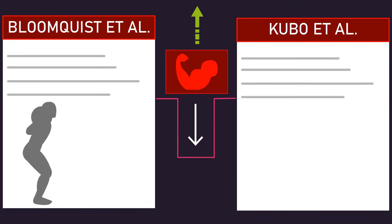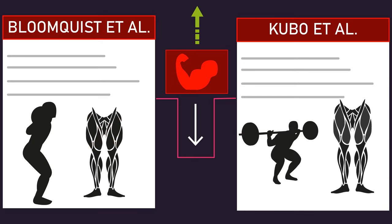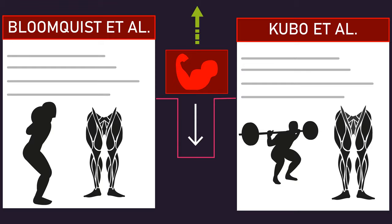These two studies collectively indicate deeper squat depths are associated with more hypertrophy overall. 60-degree squats in the Bloomquist study failed to optimize growth across many regions of the front thigh, while although 90-degree squats in the Kubo study seemed to be fine for quad growth, they failed to maximize gluteus maximus and adductor growth when compared to 140-degree deep squats.